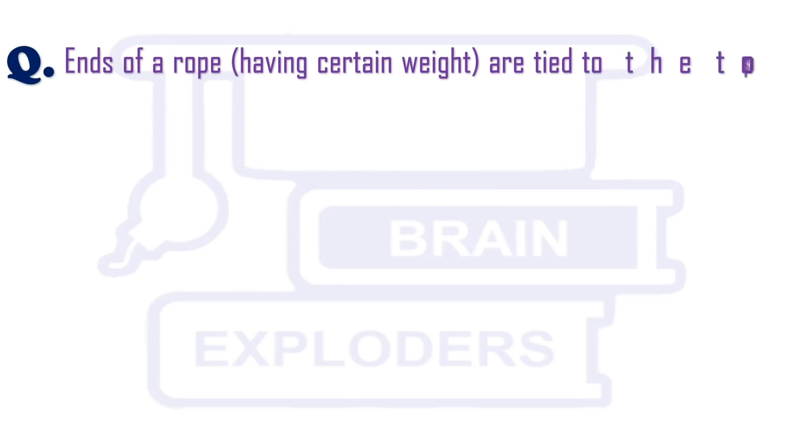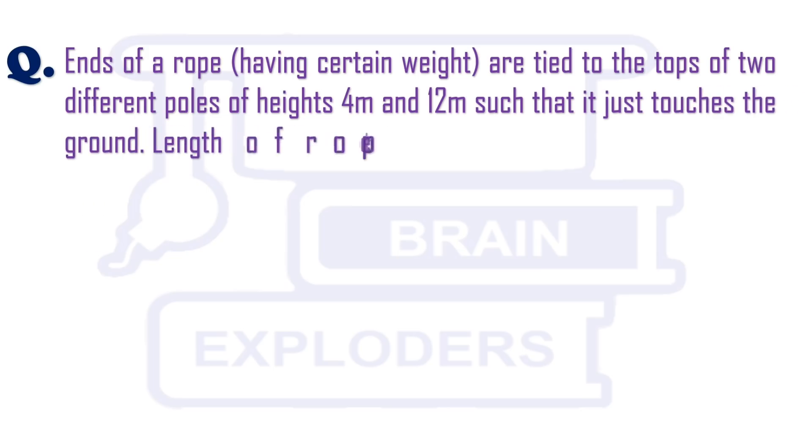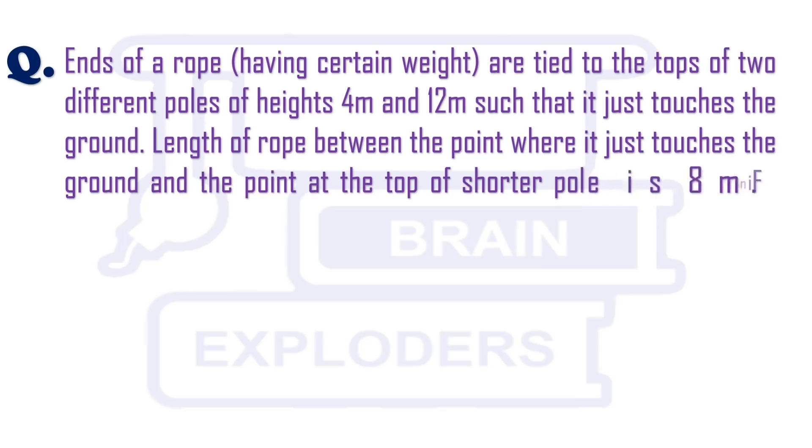Ends of rope are tied to the tops of two different poles of height 4m and 12m such that it just touches the ground. Length of rope between the point where it just touches the ground and the point at the top of the shorter pole is 8m. Find the total length of rope.